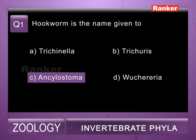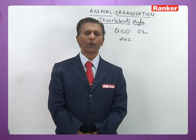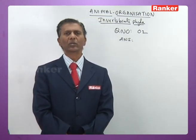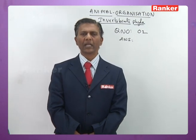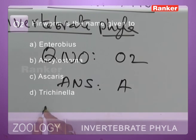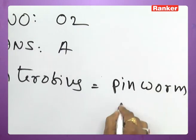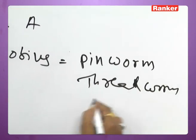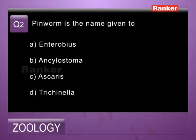Second question: pinworm is the name given to — a) Enterobius, b) Ankylostoma, c) Ascaris, d) Trichinella. Enterobius is commonly called pinworm, threadworm, or seatworm. Ankylostoma is hookworm, Ascaris is roundworm, Trichinella is trichina worm or garbage worm. So the second question's correct answer is a) Enterobius, which is commonly called pinworm, threadworm, or seatworm.